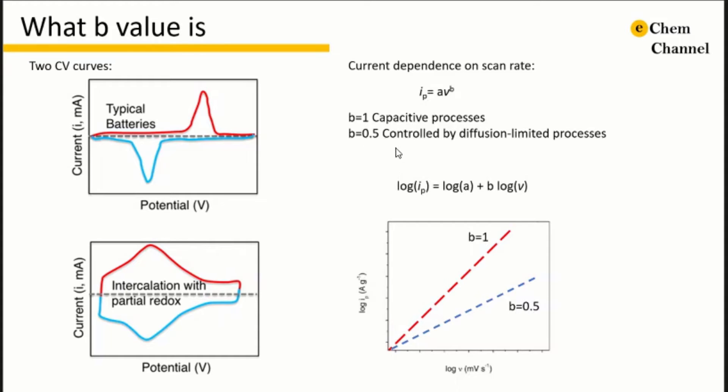If we do log to both sides of the equation, then we can write log IP equals log a plus b log v. When we plot log IP as a function of log v, the slope of the curve is the b value. In this way it is very clear whether the process is capacitive or diffusion controlled.